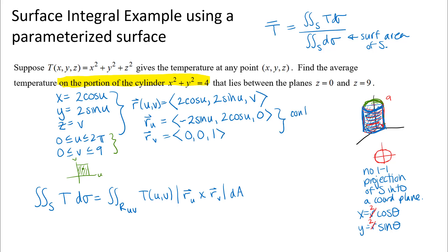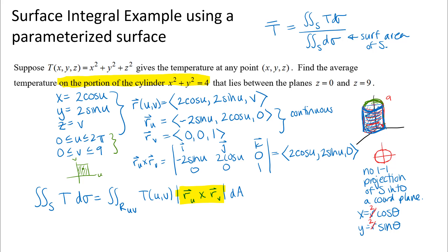The other condition for a smooth parameterization is that the magnitude of the cross product is not zero. We need to calculate that magnitude anyway for our dσ differential. Computing the cross product, I get two cosine u, two sine u, zero. The magnitude of that cross product is the square root of four cosine²u plus four sine²u, which is just the square root of four, or simply 2. The magnitude is not zero, so I do have a smooth parameterization.